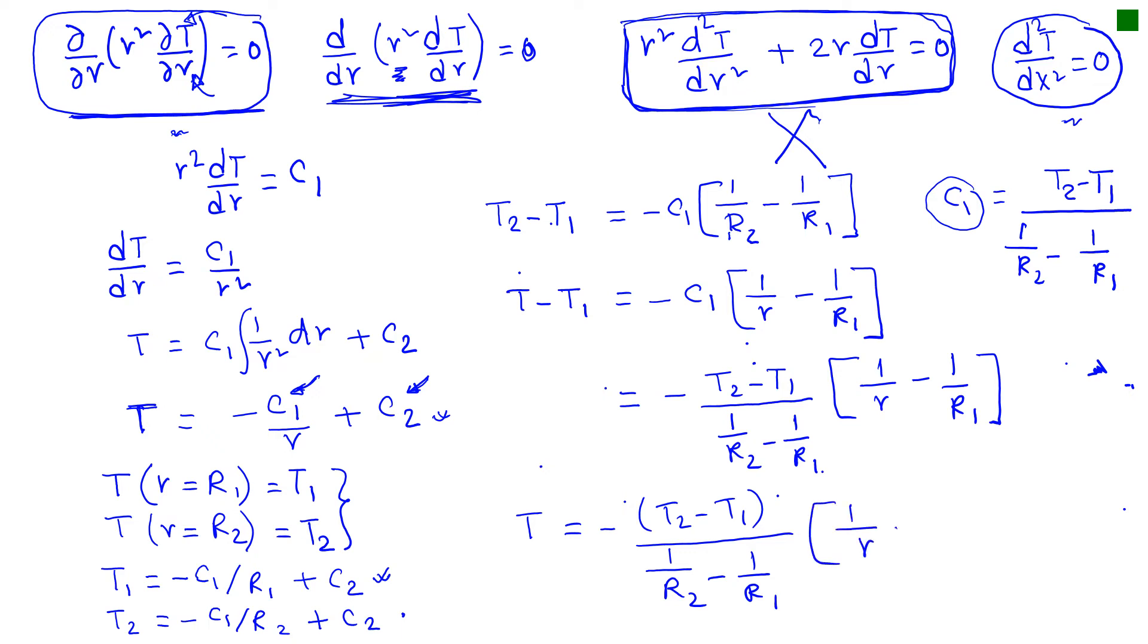So anytime we find the solution we should check if it really satisfies the boundary condition. So if we put R equal to R1 then this entire term is equal to 0 and we get T equal to T1. If we put R equal to R2 then this numerator and denominator cancels and we get T2.